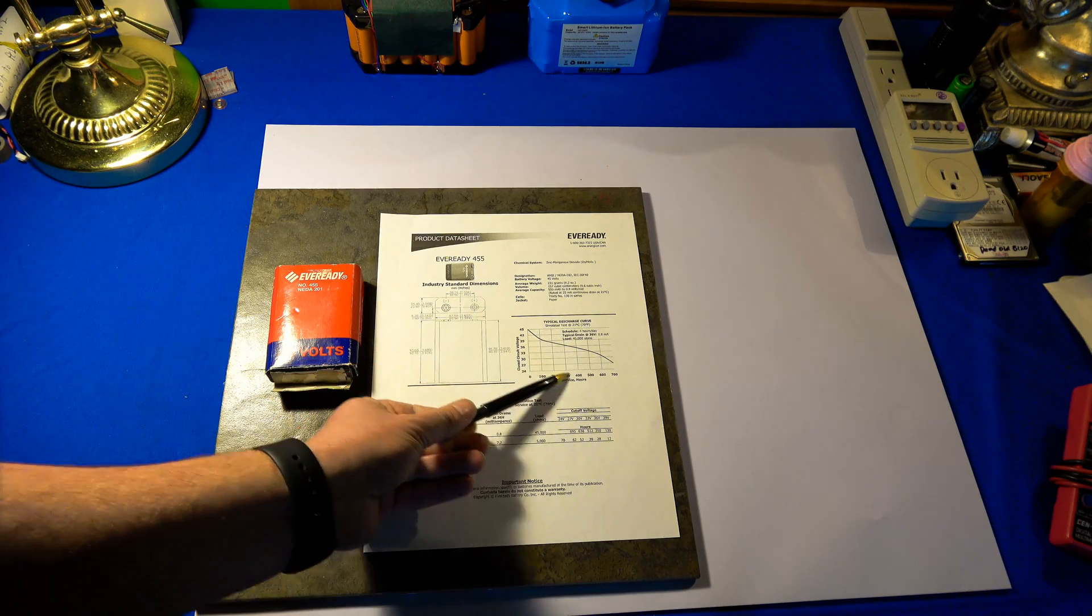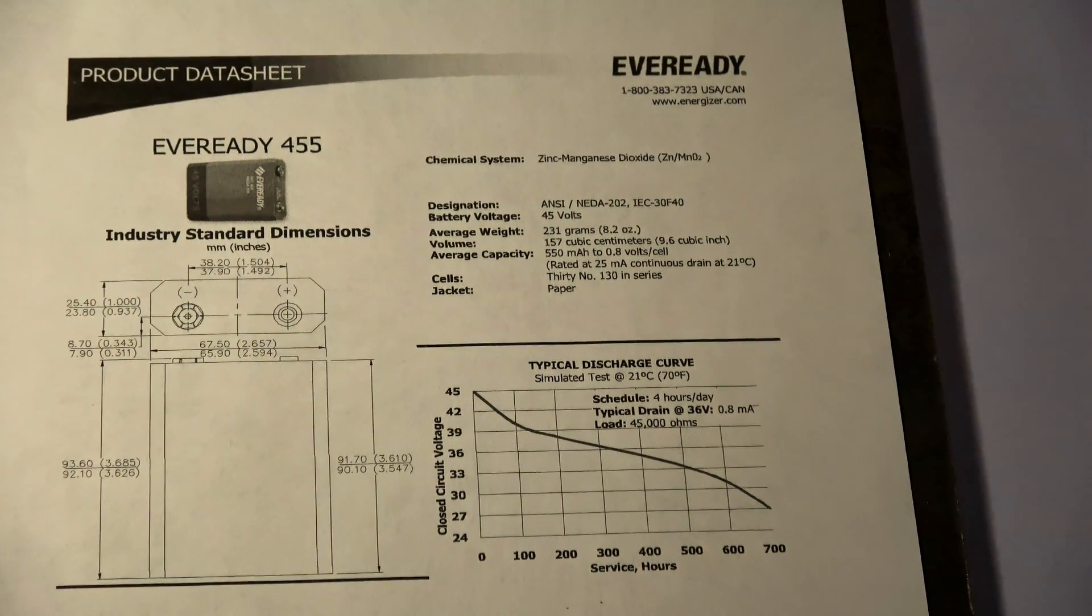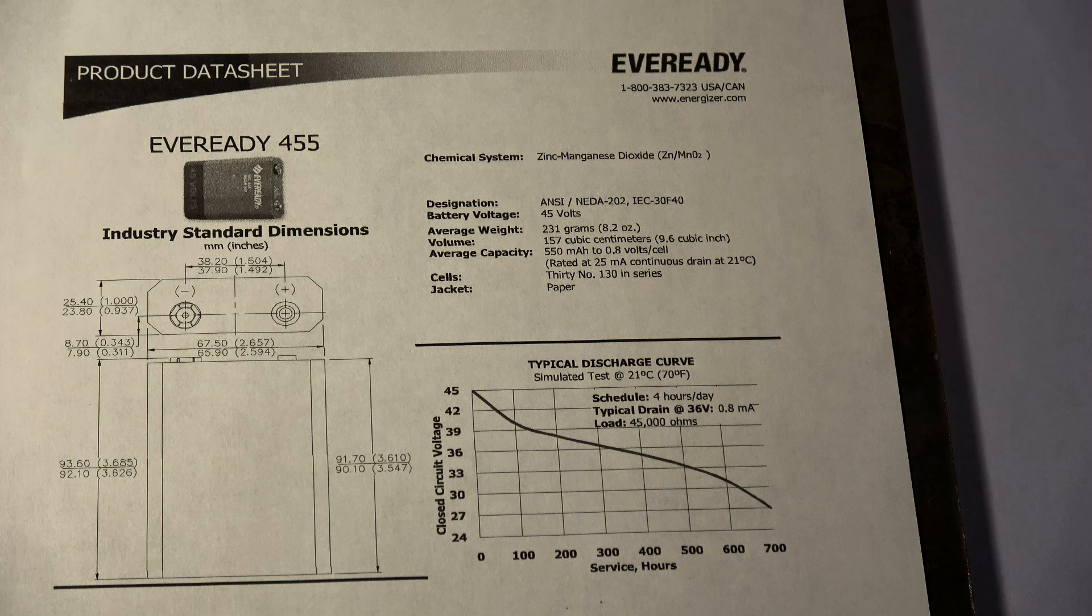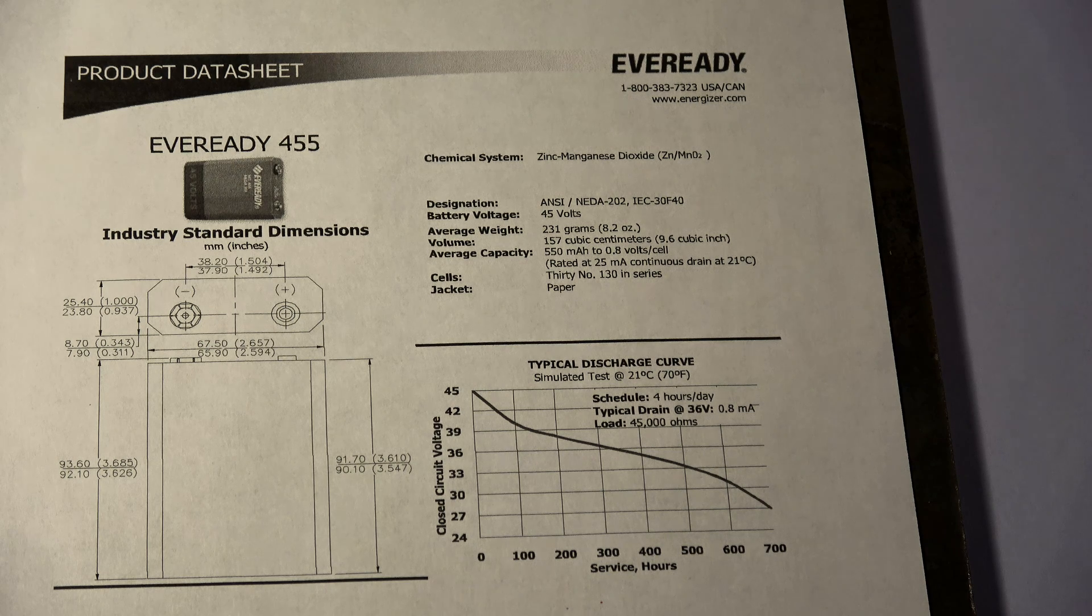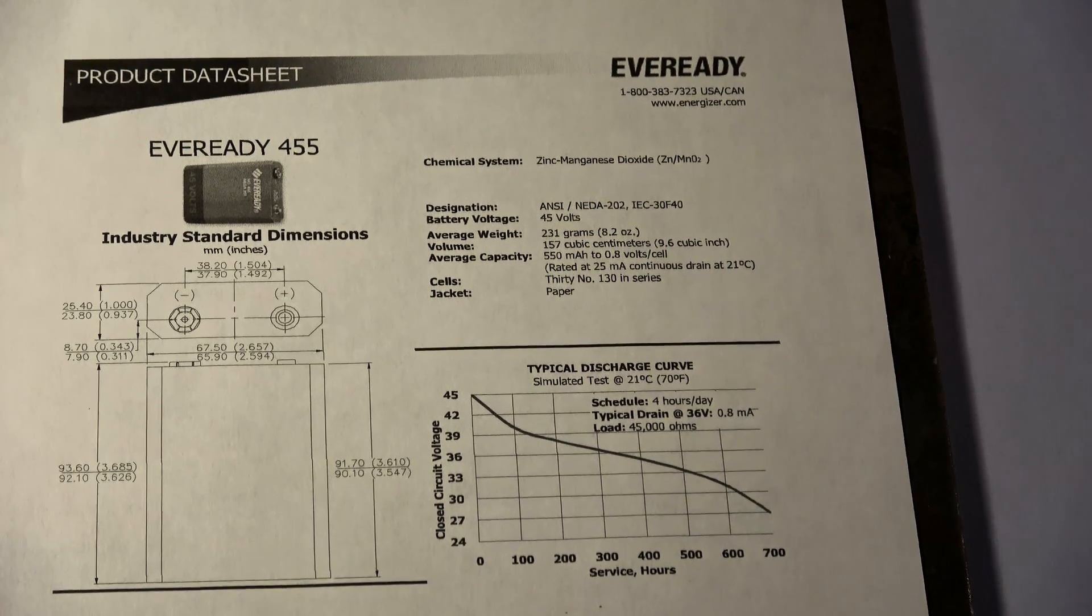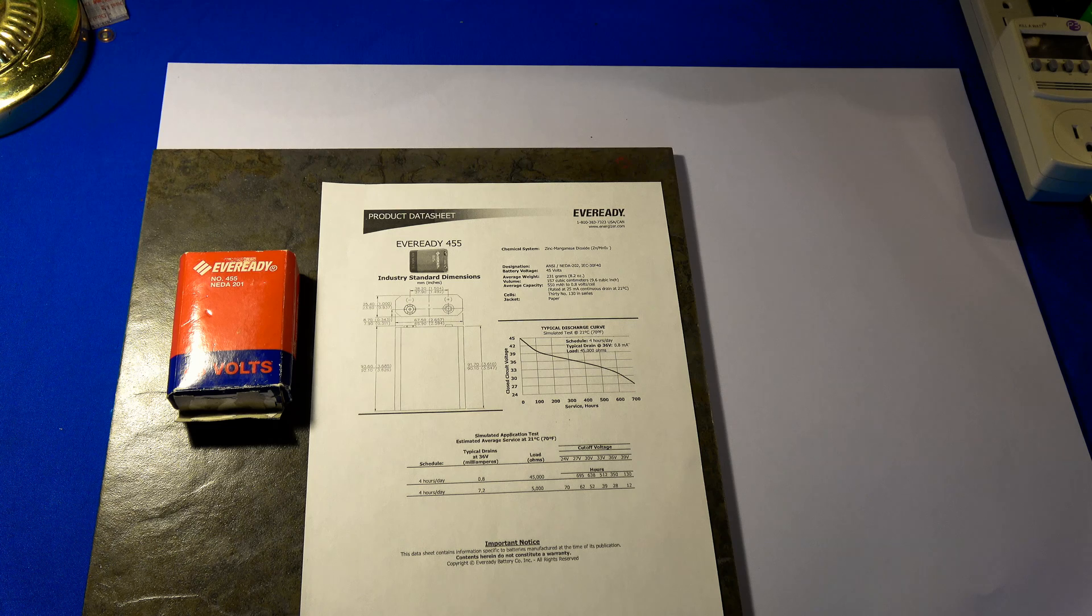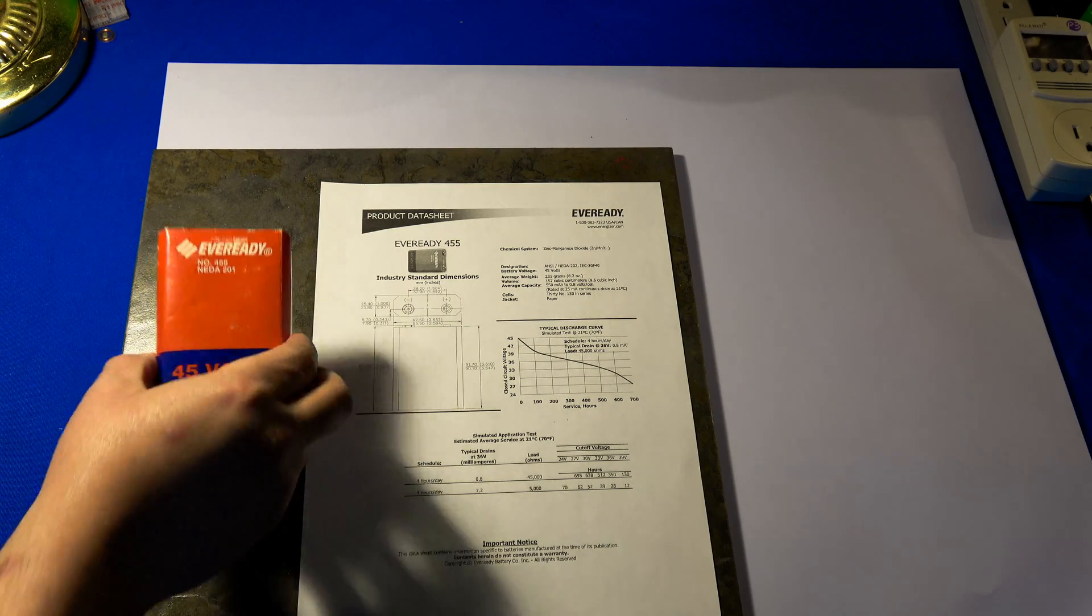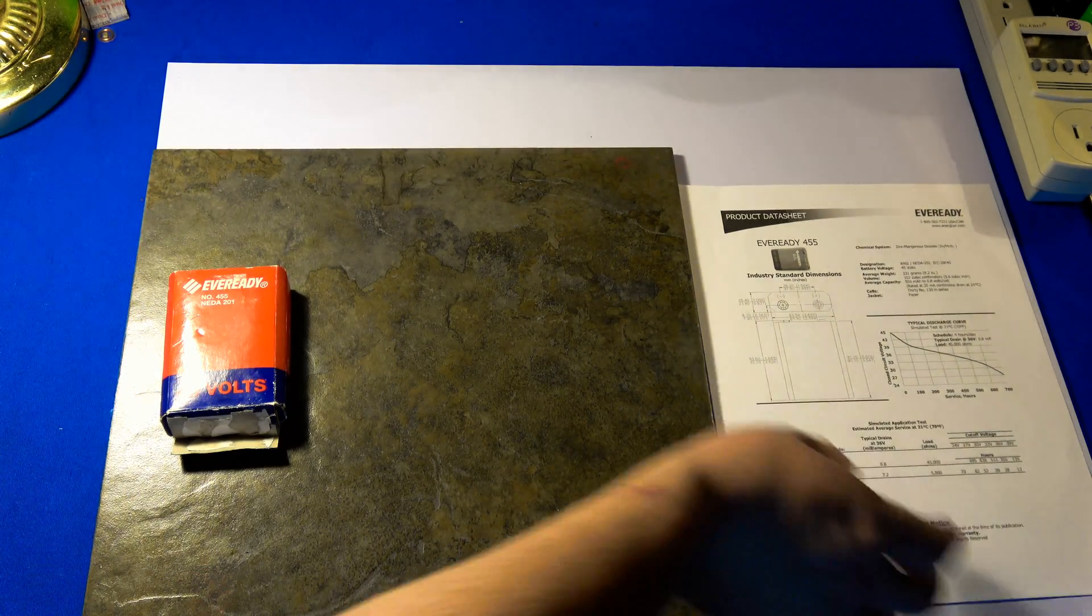You can see the discharge rate here. Schedule 4 hours a day, typical drain at 36 volts was 0.8 milliamps, 45 volt at a 45,000 ohm load. And it looks like it's got quite a number of service hours on there. Now because this was in medical equipment, it had to be replaced due to age rather than actual being used up or exhausted. You can't have medical equipment biting the dust on people.